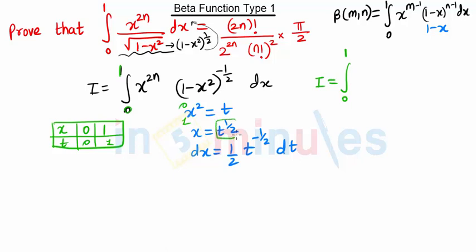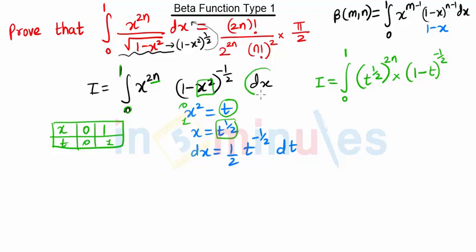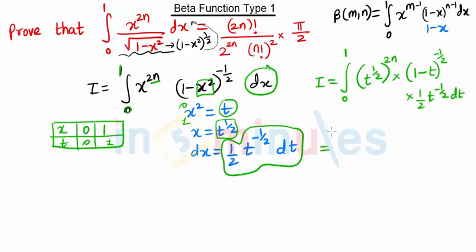Our new integration becomes the integral from 0 to 1 of x raised to half, the whole raised to 2n — since x equals t raised to half — multiplied by (1 minus x squared), which we replace with (1 minus t) raised to minus half, and instead of dx we substitute half t raised to minus half dt.